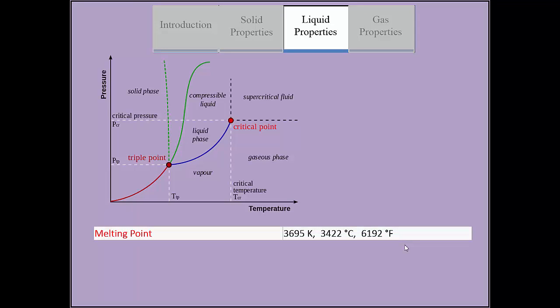In addition, tungsten boasts the highest tensile strength of all metals due to strong covalent bonds formed by the interactions between tungsten atoms by the 5d electrons.